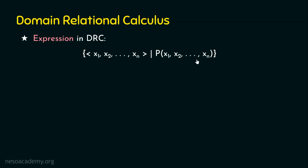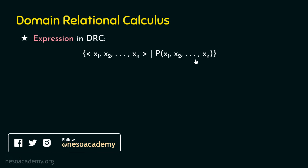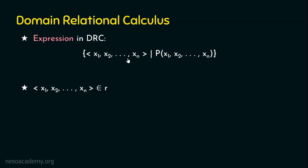Both tuple relational calculus and domain relational calculus are closely related — domain relational calculus uses domain variables set on attributes. In the expression, x1, x2, up to xn belonging to relation r means there are n attributes in relation r where x1, x2, up to xn are domain variables or domain constants. A domain variable x can also be compared with another domain variable y — for example, a loan branch compared with an account branch — using comparison operators.